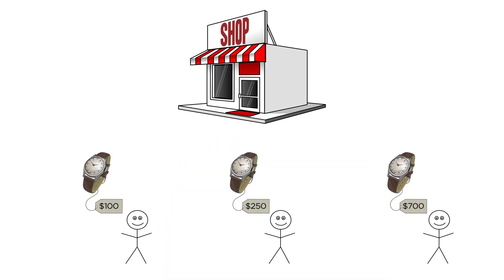Finally, you might be a bit skeptical of a firm's ability to perfectly price discriminate. How could it possibly know the exact willingness to pay for every single consumer? Well, usually it can't. But firms can do things that approximate this by using certain signals from consumers that hint at their willingness to pay. We'll look at some real-world examples of this in the application video.